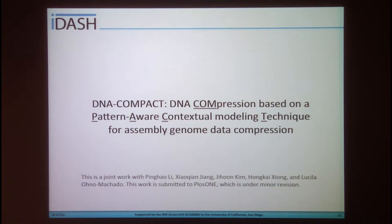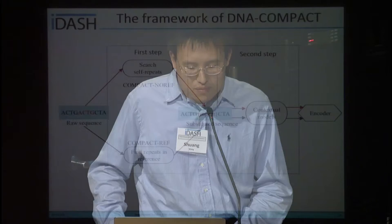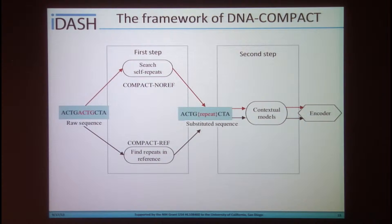We will first introduce the DNA Compact tools for genome assembly data compression. This is a joint work, and the paper is submitted to PLOS ONE and is currently under minor revision. The proposed framework can handle compression of genome assembly data with and without a reference, corresponding to Compact No-Reference and Compact Reference. The framework contains two steps. In the first step, Compact No-Reference removes redundancy by searching self-repeats in contigs, while Compact Reference finds repeats within a reference. In the second step, the remaining encoded sequence is compressed through a contextual model-based entropy encoder.